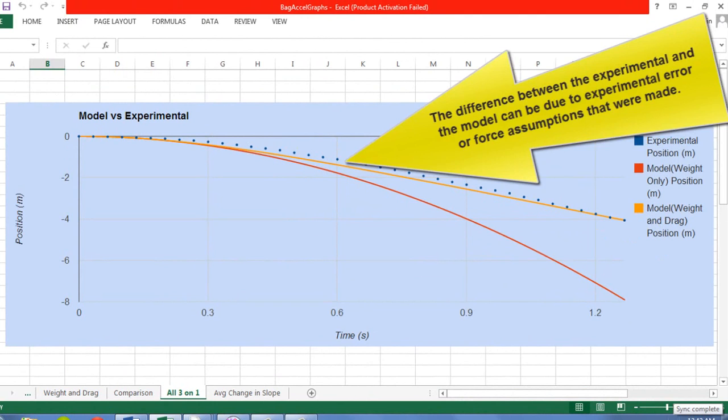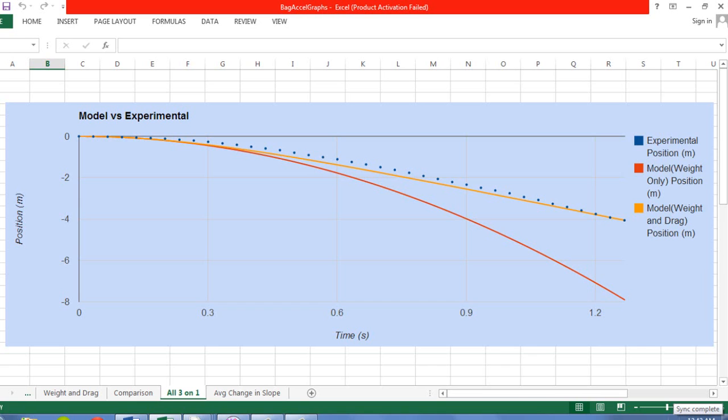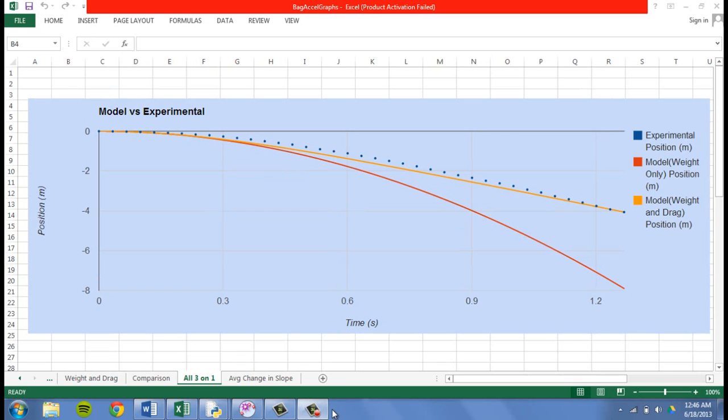In conclusion, we can say that the terminal velocity will be experienced by the object with a large quantity of drag, which is a slowly dropping object that has more surface area and less density. This is what happened in my case. To make sure my bag had terminal velocity or was very, very close to having terminal velocity, I checked on Excel.